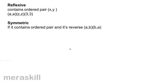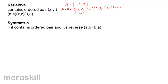For example, let's take a set A = {1, 2, 3}. So A cross A is: (1,1), (1,2), (1,3), (2,1), (2,2), (2,3), (3,1), (3,2), and (3,3). Among these, some share a relationship of reflexivity.